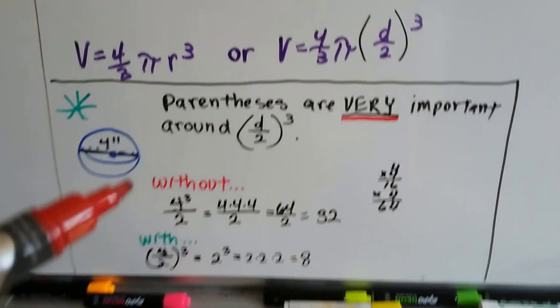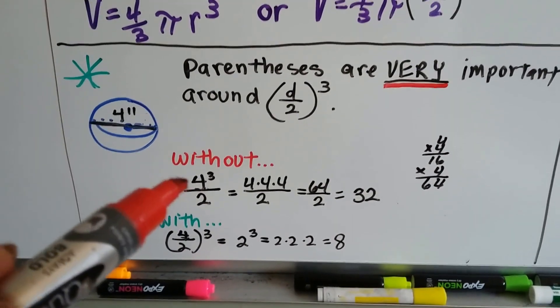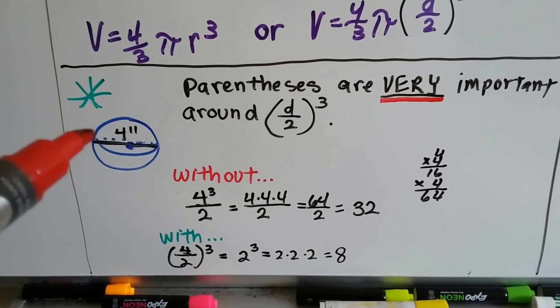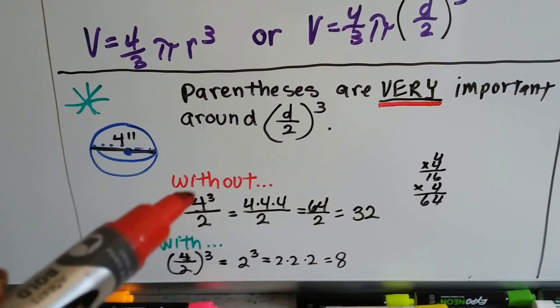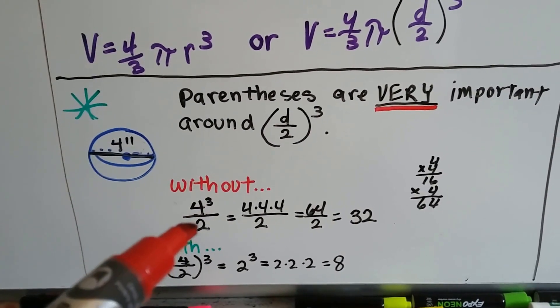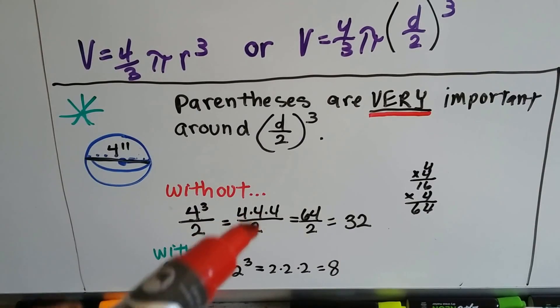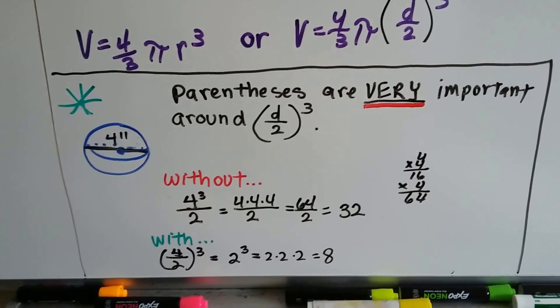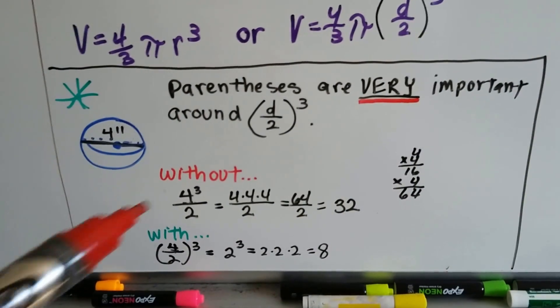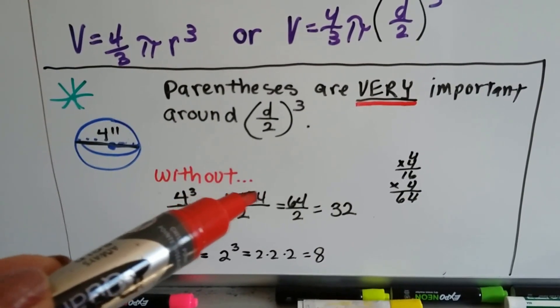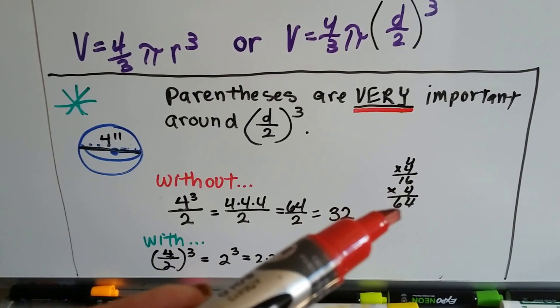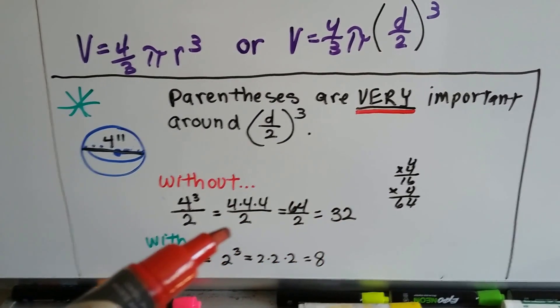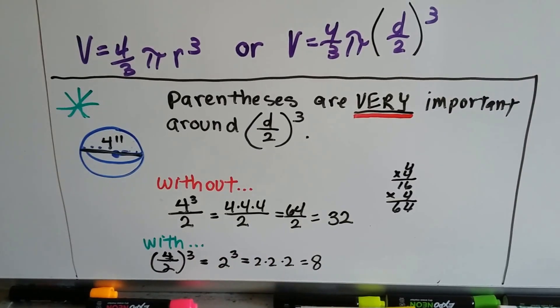Without the parentheses, a diameter of 4 inches would be 4 cubed divided by 2. We're going to cube the 4 and then divide it by 2. Because in order of operations, we do exponents before division. So we would have 4 times 4 times 4. 4 times 4 is 16, times 4 is 64. 64 divided by 2 is 32.